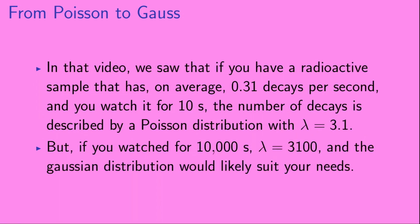So, in that video, we saw that if you have a radioactive sample that has, on average, 0.31 decays per second, and you watch it for 10 seconds, the number of decays is described by a Poisson distribution with lambda equal 3.1. But if you watched for 10,000 seconds, lambda would equal 3,100, and the Gaussian distribution would likely suit your needs.